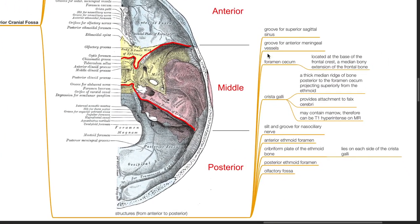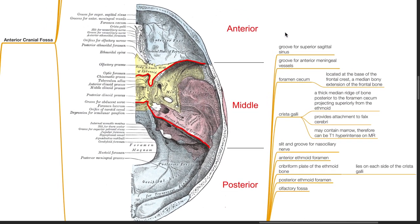Structures from anterior to posterior: groove for the superior sagittal sinus, groove for the anterior meningeal vessels, the foramen cecum located at the base of the frontal crest — a median bony extension of the frontal bone. The crista galli is a thick median ridge of bone posterior to the foramen cecum, projecting superiorly from the ethmoid. It provides attachment to the falx cerebri and may contain marrow, therefore can be T1 hyperintense on MRI. Slit and groove for the nasoiliary nerve, anterior ethmoid foramen, cribriform plate of the ethmoid bone which lies on each side of the crista galli, the posterior ethmoid foramen, and olfactory fossa.